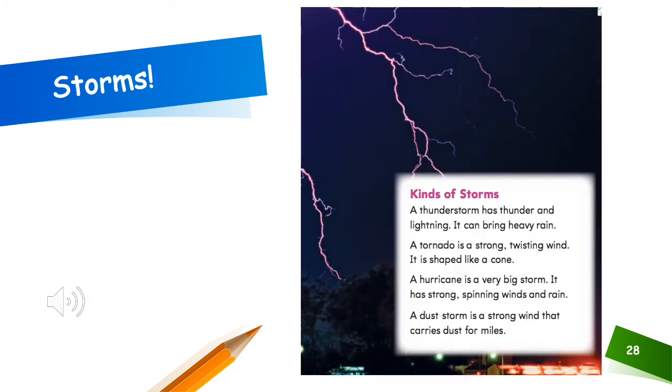Kinds of storms. A thunderstorm has thunder and lightning. It can bring heavy rain. A tornado is a strong, twisting wind. It is shaped like a cone. A hurricane is a very big storm. It has strong, spinning winds and rain. A dust storm is a strong wind that carries dust for miles.